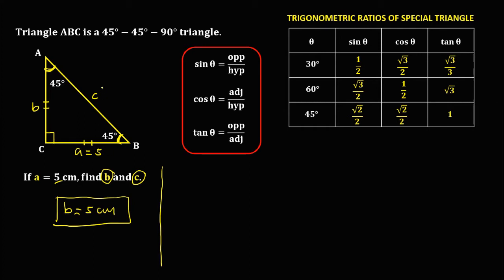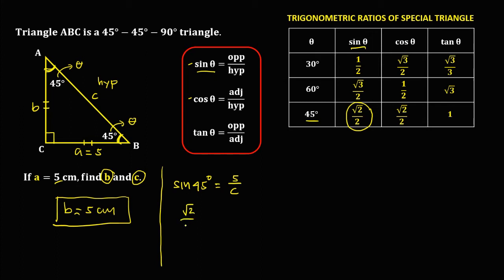To solve for side C, since side C is the hypotenuse, we can use sine theta or cosine theta, where theta equals 45 degrees. Using sine theta, sine 45 degrees equals the opposite — that's A or B, which equals 5 — over the hypotenuse C. Since sine 45 equals square root of 2 over 2, we have square root of 2 over 2 equals 5 over C.